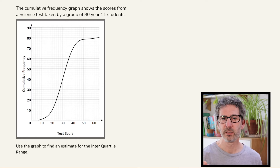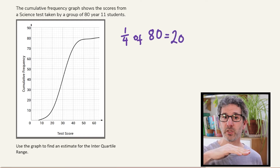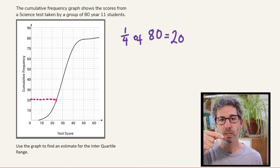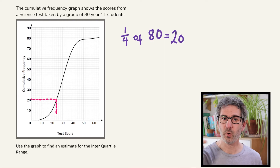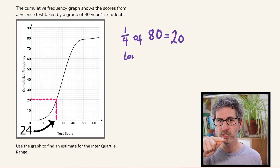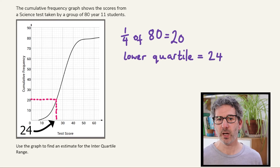We've got 80 values. A quarter of 80 is 20, so we go up to 20 on the cumulative frequency axis, read across, and then down to see what that represents as a test score. Going across from a cumulative frequency of 20 and reading down, the test score axis gives us 24.